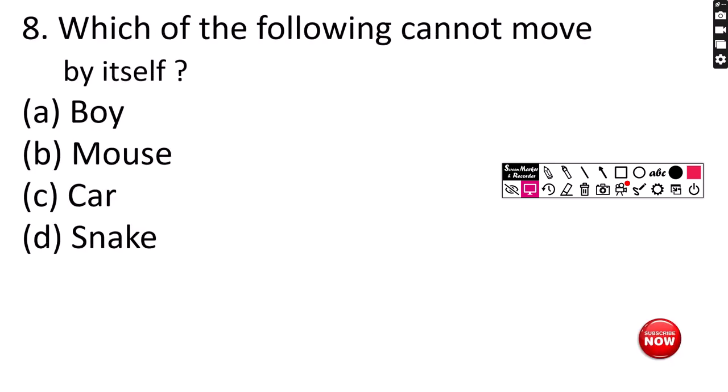Number 8. Which of the following cannot move by itself? A. Boy, B. Mouse, C. Car, D. Snake. Correct answer is option C, Car. Car cannot move by itself.